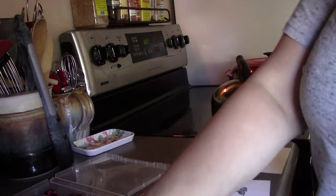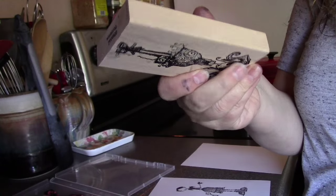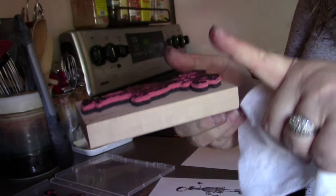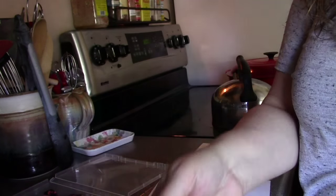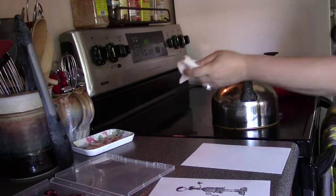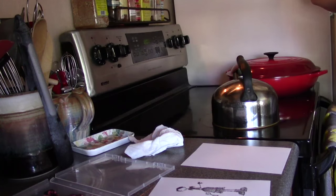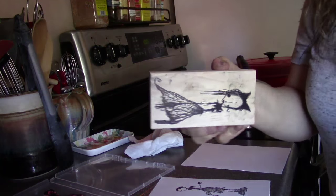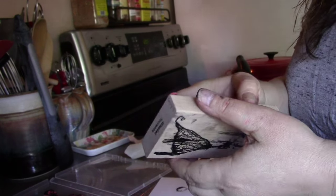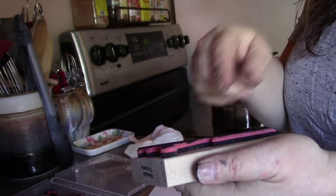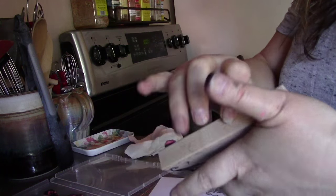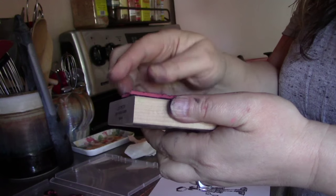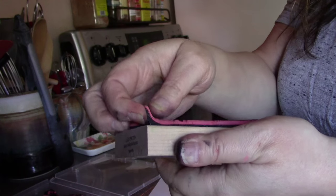So I took the whole stamp, wood block and all, and stuck it rubber-side up in my microwave for 30 seconds. Now, you're going to want to test your microwave to see how long it takes. Start with 10 seconds, and if it doesn't pull up easily, put it back in for 10 more until you figure out what temperature works well. But they should pull up just like this.